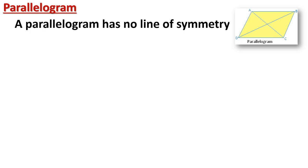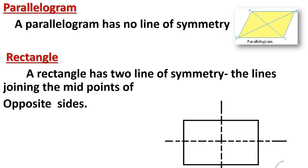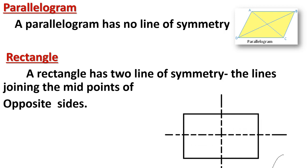Now the rectangle: in a rectangle, opposite sides are equal and all angles are 90 degrees. A rectangle has two lines of symmetry — the lines joining the midpoints of opposite sides. Note that a rectangle does not have a diagonal line of symmetry; we cannot join opposite vertices as a line of symmetry.